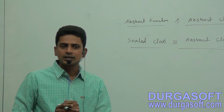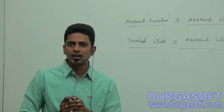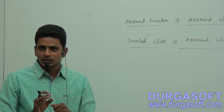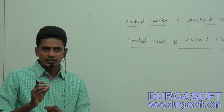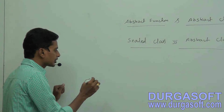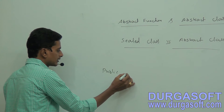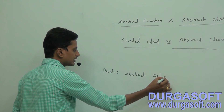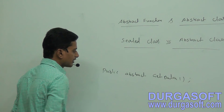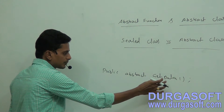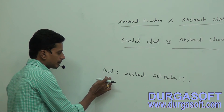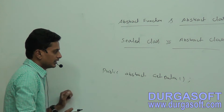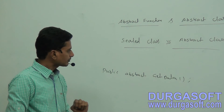By default, abstract class functions are not public and abstract. So whenever you are creating an abstract function, you must mention 'public abstract' — for example, 'public abstract getData'. Compulsory you should mention both public and abstract keywords. That is the detail about abstract class.